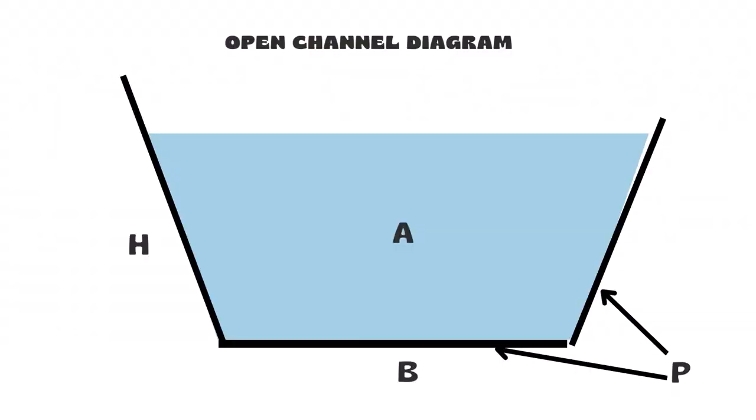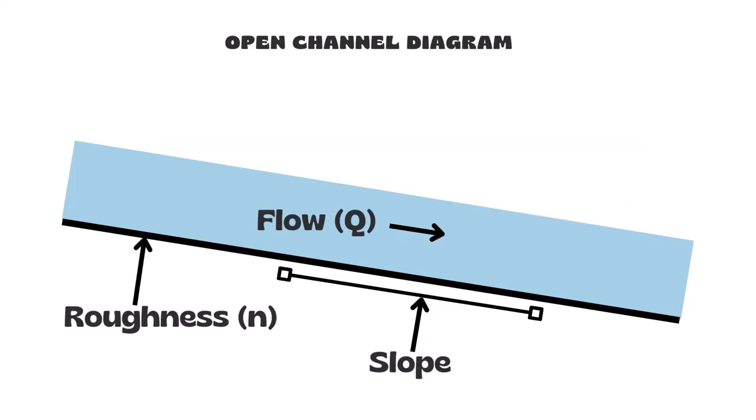So here's a diagram of an open channel. You can see here we have the area where the water occupies, the height, the base, and then we have the wetted perimeter which is the amount of the surface that actually makes contact with water. So it's not going to be the entire perimeter of the entire structure, but the part of the perimeter that's actually making contact with water. Here's another view here where you can see the flow in Q, the slope is measured with those two dots showing the change between the length and the drop, and then the roughness n showing the roughness between the surface and the actual water.